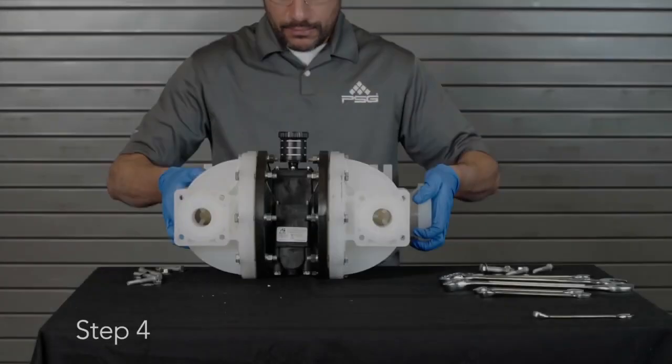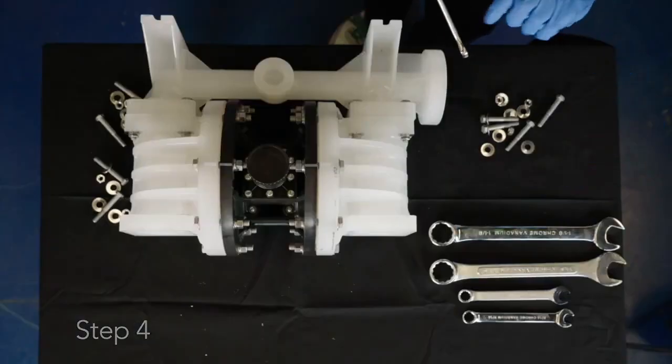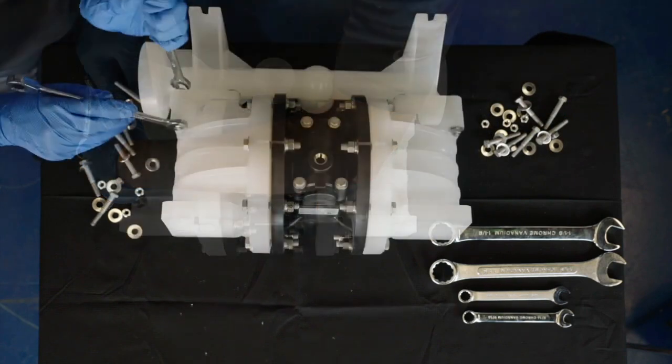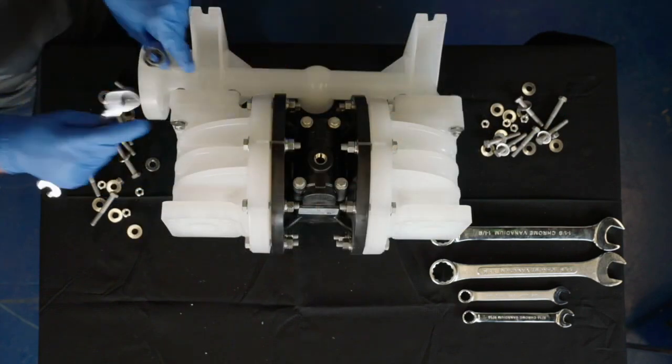Step 4: Turn the pump on its side and using the ½-inch wrenches, remove 8 hex cap screws, 16 washers, and 8 nuts from the suction manifold.